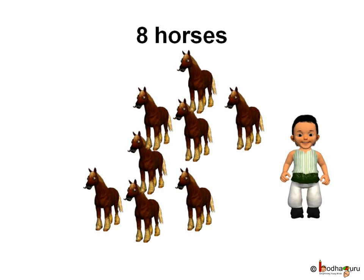Bhola had 8 horses. He had a rectangular piece of land to make stables for his horses. He wanted to make stables in such a way that each row had the same number of horses. Let us see what all he tried.